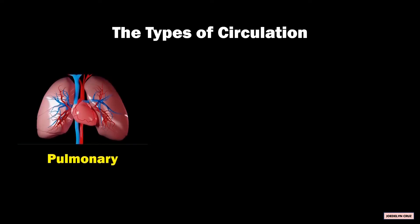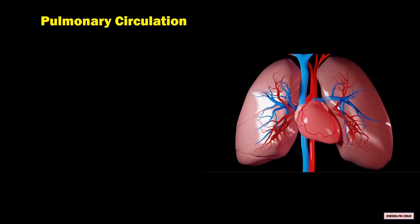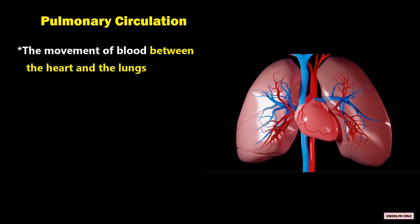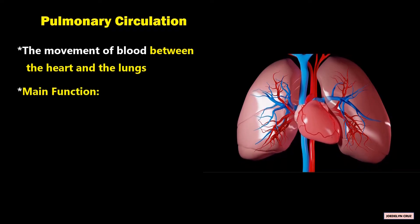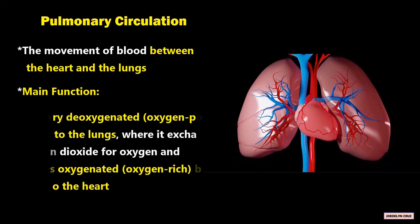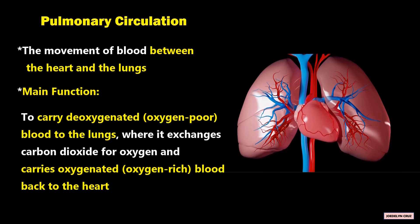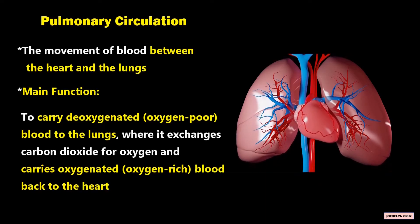There are three types of circulation. The first is the pulmonary circulation. Pulmonary circulation is the movement of blood between the heart and the lungs. The main function of this circulation is to carry the deoxygenated, or oxygen-poor, blood to the lungs, where it exchanges carbon dioxide for oxygen, and carries oxygenated, or oxygen-rich, blood back to the heart.